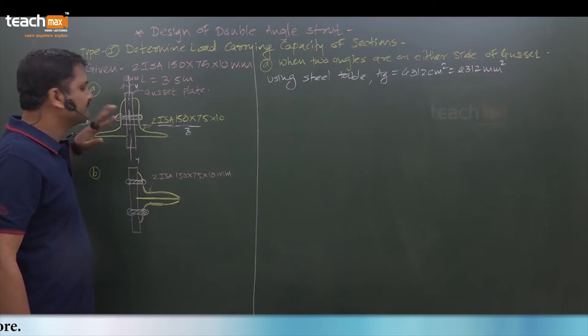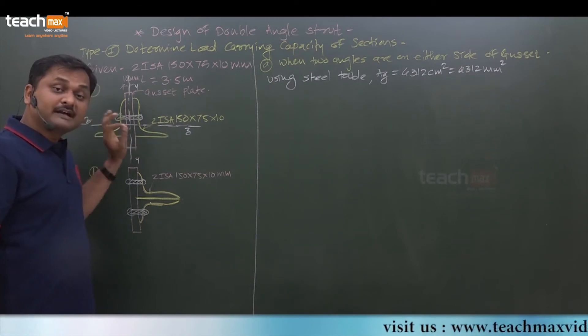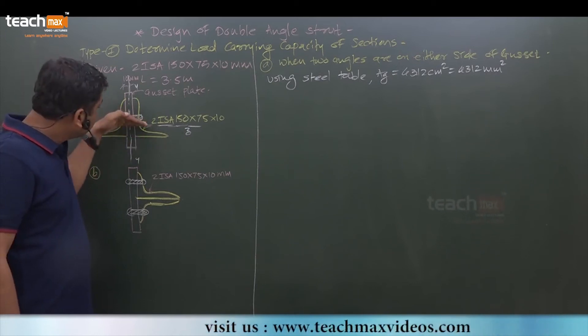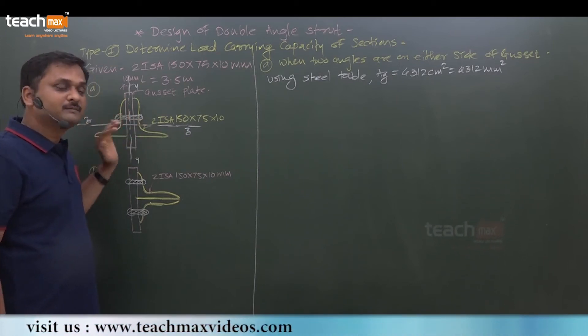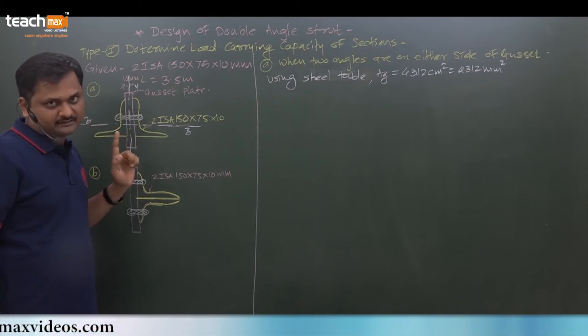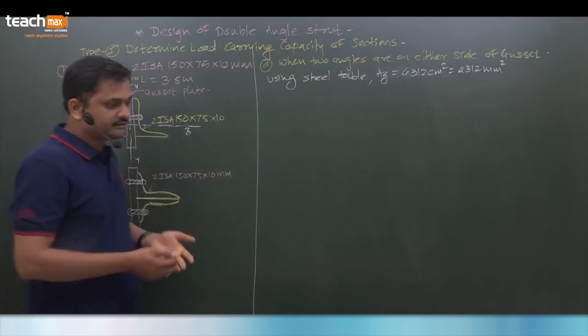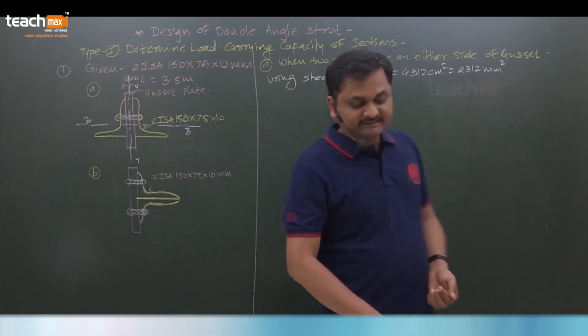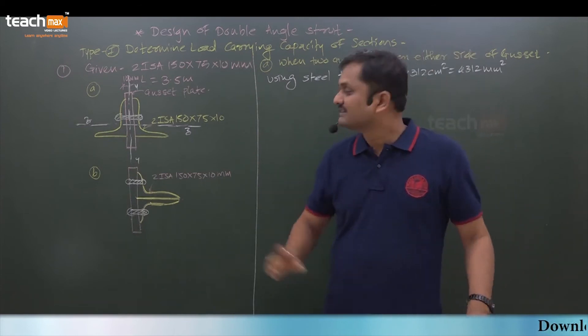So radius of gyration about zz axis remains same, whatever is the radius of gyration of single angle. Or here also, the rxx whatever given in steel table is nothing but rzz.